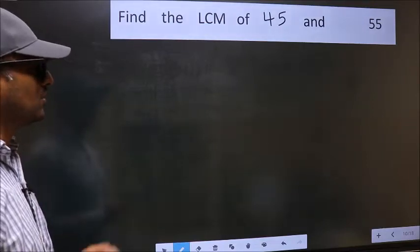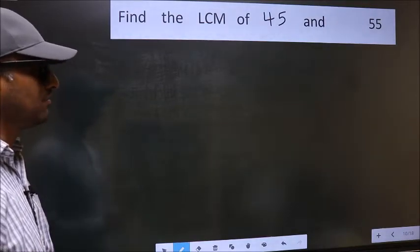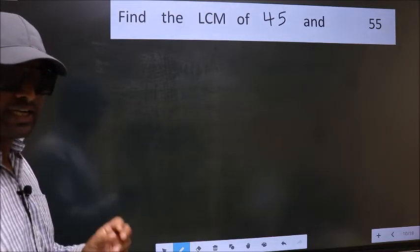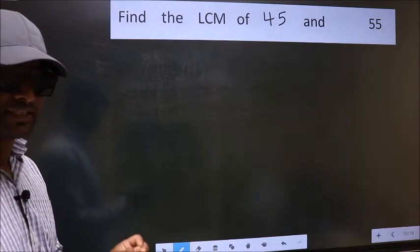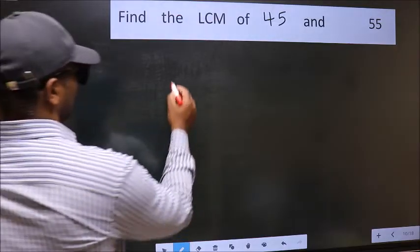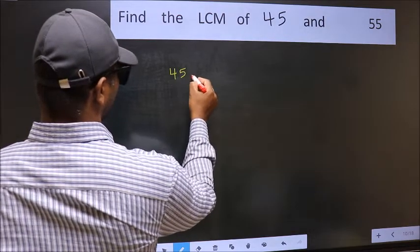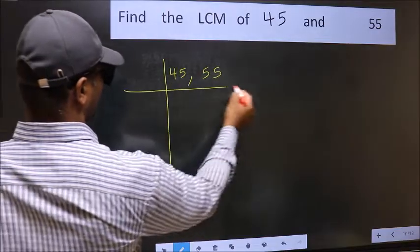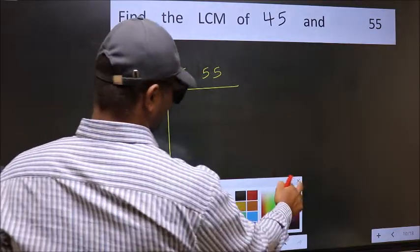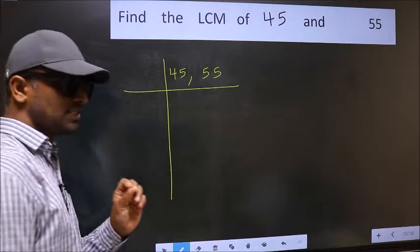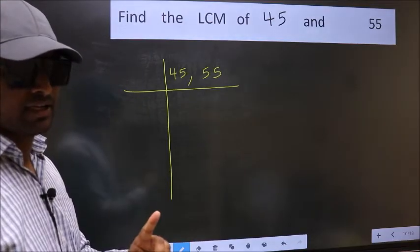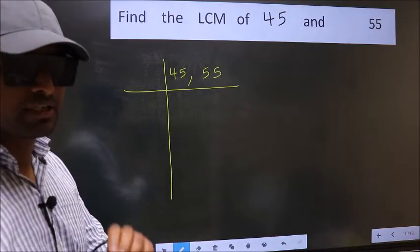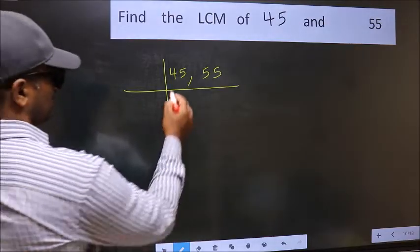Find the LCM of 45 and 55. To find the LCM, we should frame it in this way: 45 and 55. This is your step 1. Now you should focus on the first number, which is 45 here.